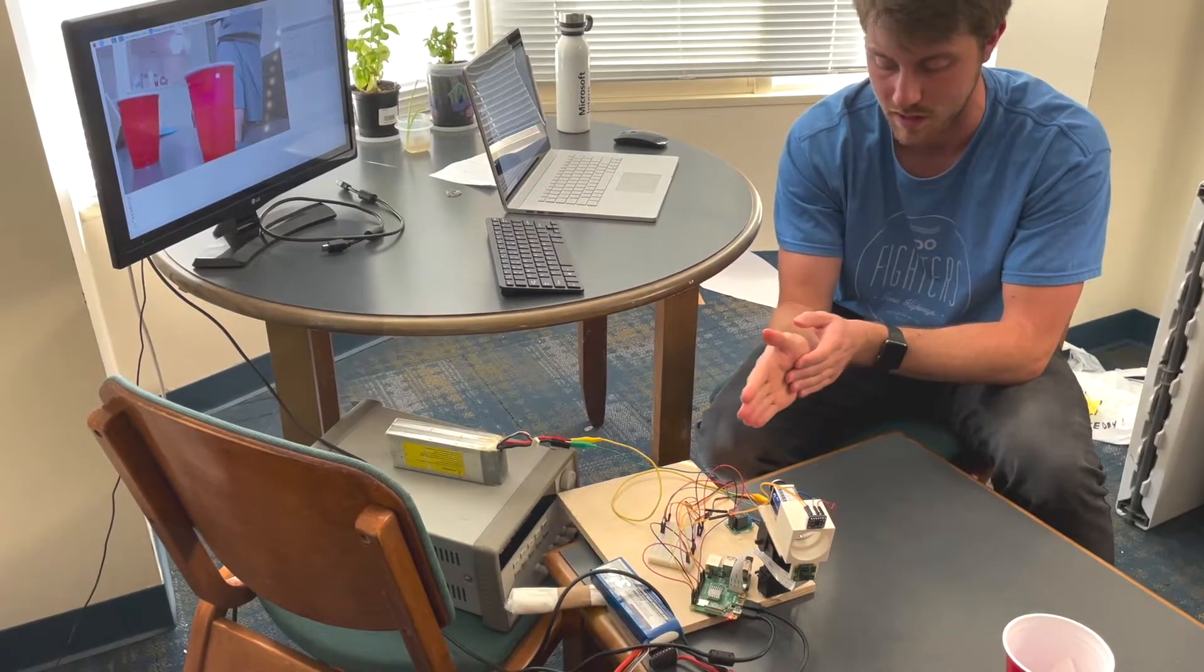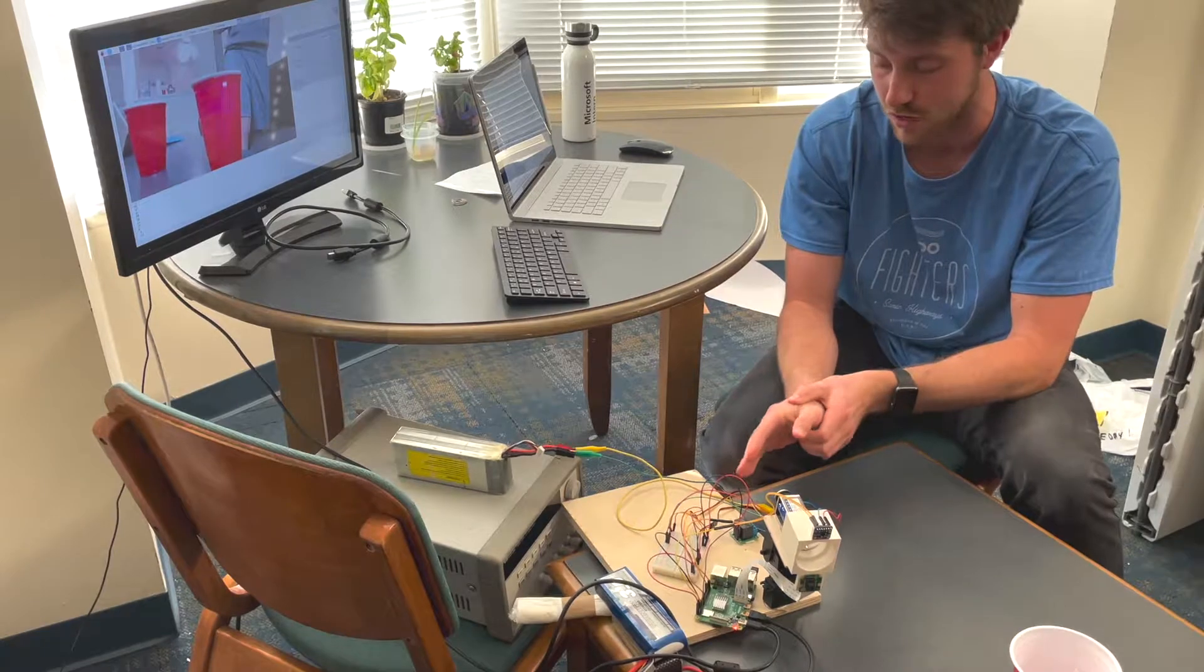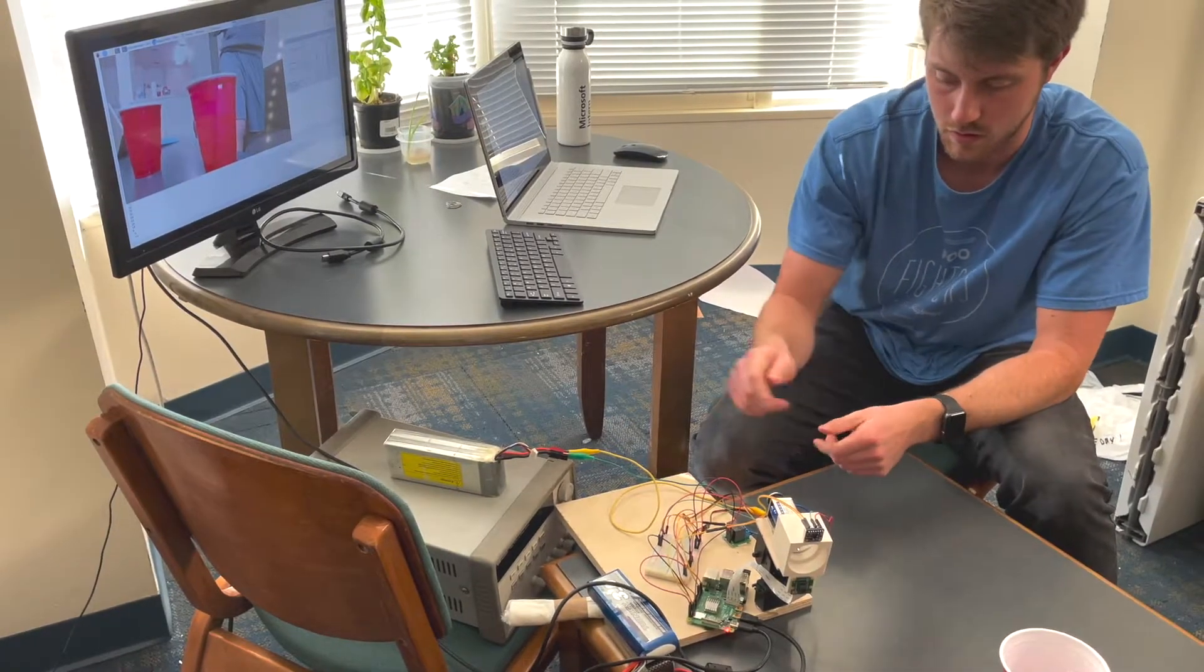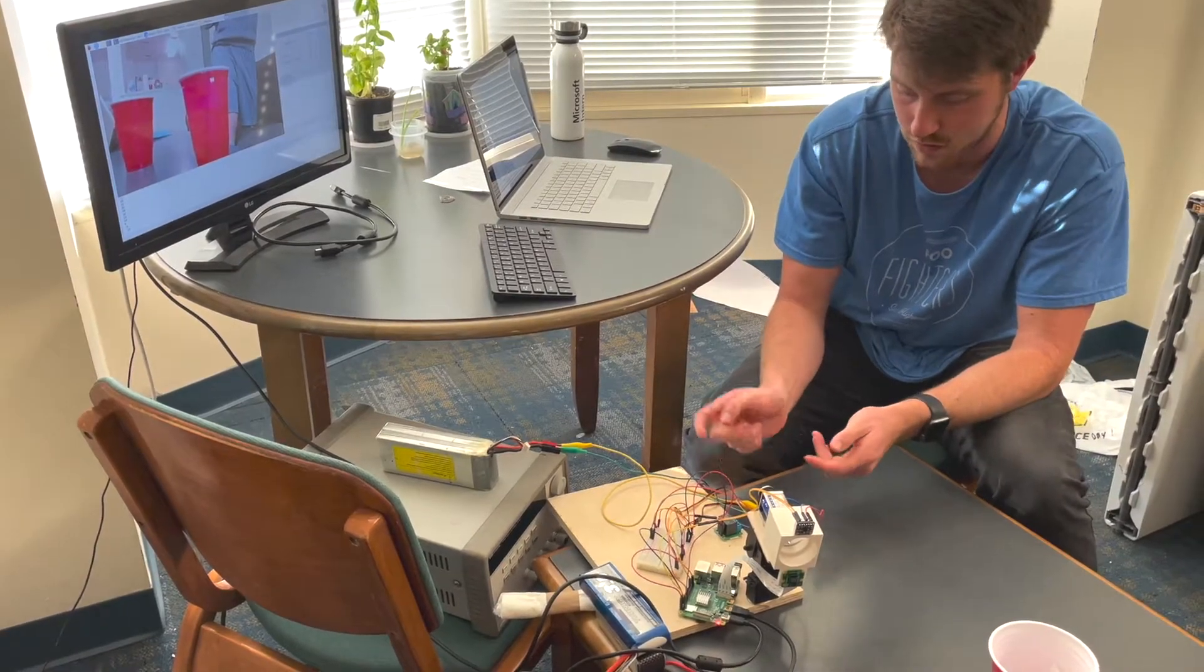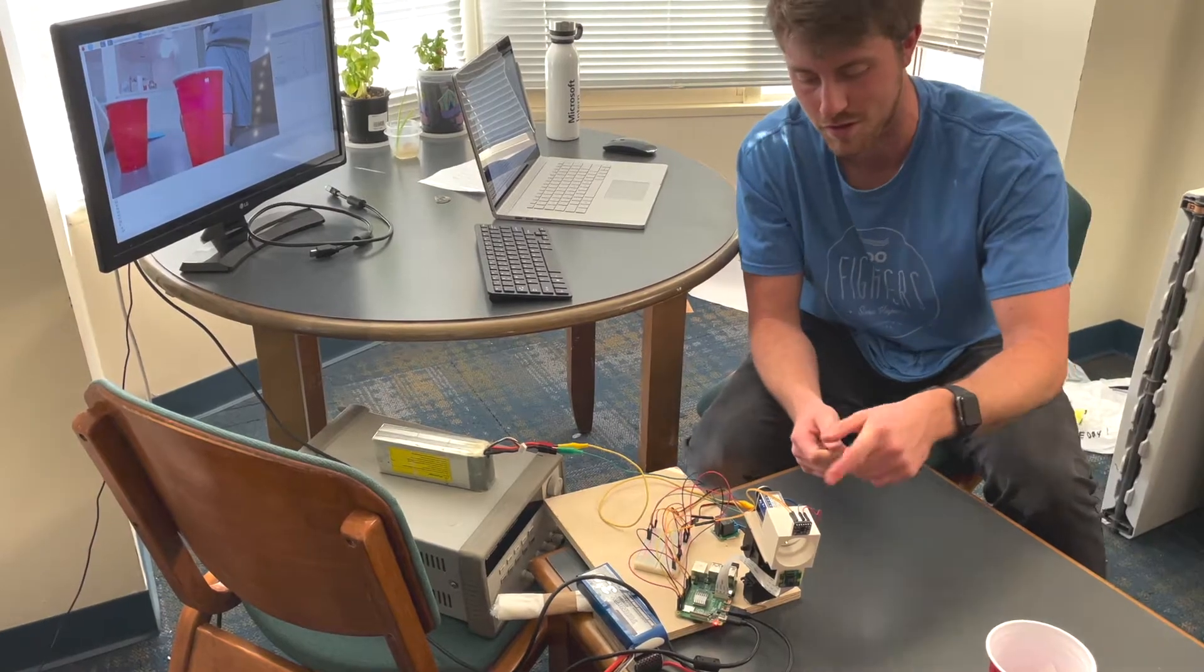So the way it works is that we have a solenoid here and a relay to drive it which is hooked up to a 12 volt battery, and whenever the signal comes from the Pi it will close the circuit and shoot a ping pong ball from this little cannon.